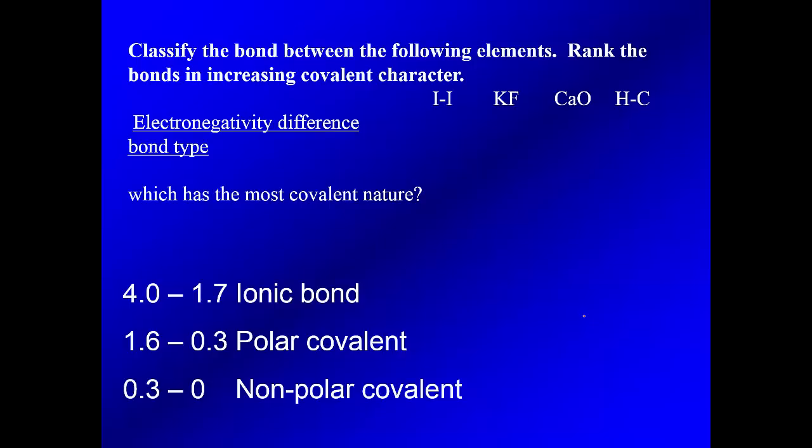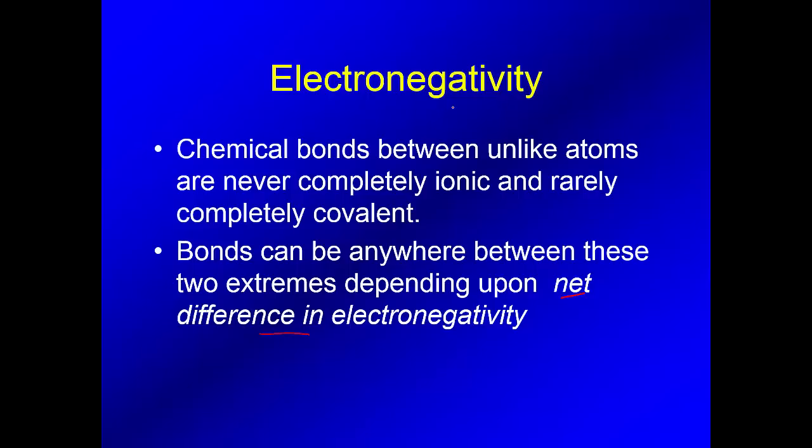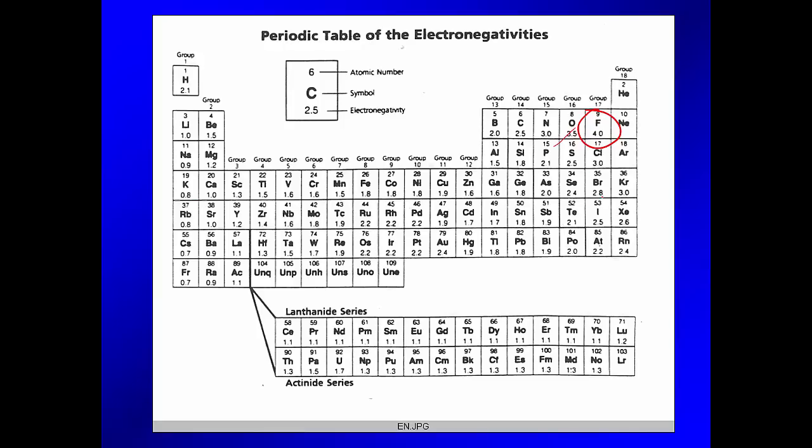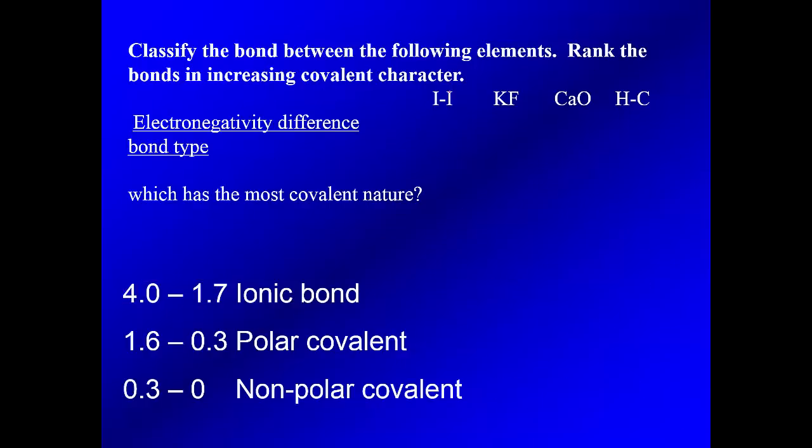So down here, what you're using is that periodic table. So it says, okay, what's the difference between these? Well, if you look it up, they're the same thing. So I'm looking at this right here, 2.5. So 2.5 minus 2.5. Well, the electronegativity difference is zero. That means it's falling in the nonpolar covalent category.